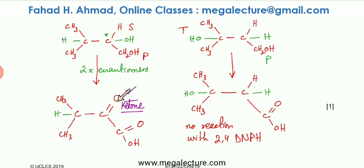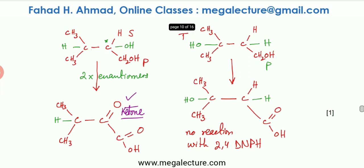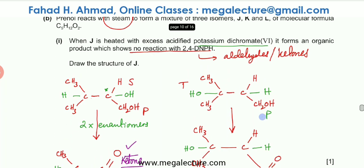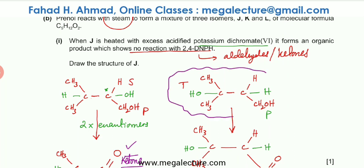The second oxidation product contains a ketone (C=O in the middle with carbon chains on both sides), so it gives a positive result with 2,4-DNPH. Therefore, the molecule J is the first molecule — whose product shows no reaction with 2,4-DNPH — and the other molecule corresponds to K and L.